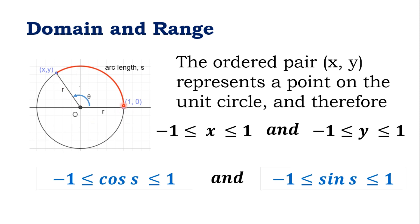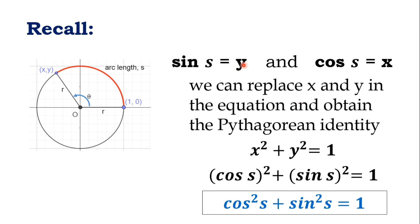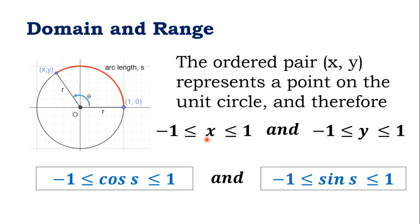Your x will just be between negative 1 and 1. Similarly, as the arc S is rotated along the unit circle, your y will always have a value from negative 1 to positive 1. Since y equals sine S and x equals cosine S, we can replace x and y with those functions. That means cosine S ranges from negative 1 to 1, and sine S also ranges from negative 1 to positive 1.